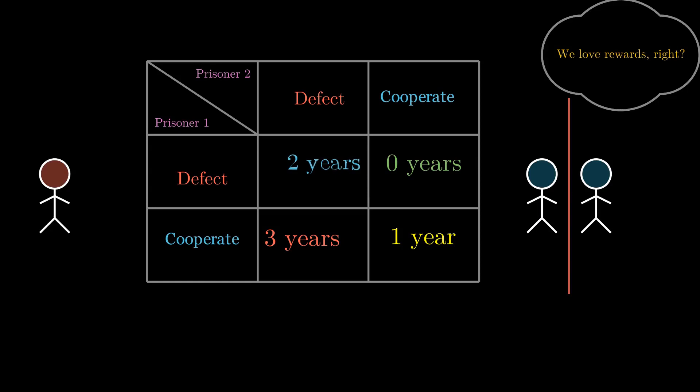When both of them defect, let's say they both get two points as punishment for defection. When both cooperate, let's say they get three points as reward for cooperation. When one defects and the other cooperates, the one defecting gets five points and the one who cooperates get zero points for being a sucker.